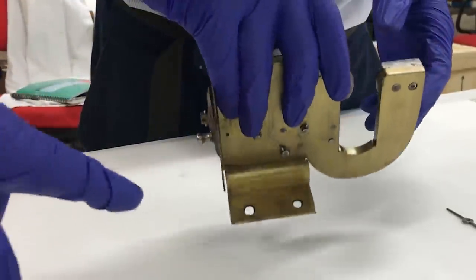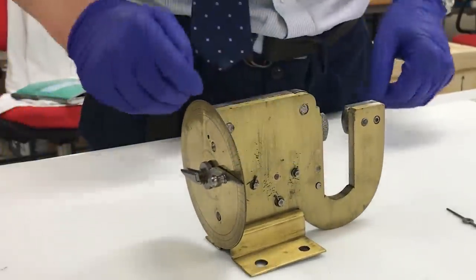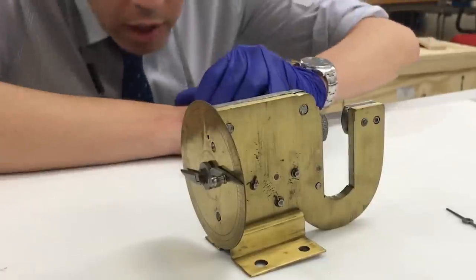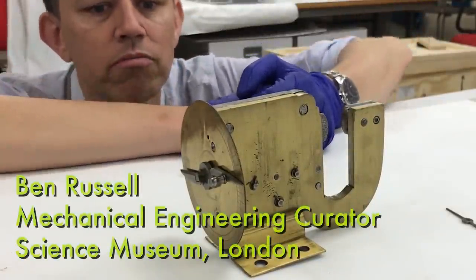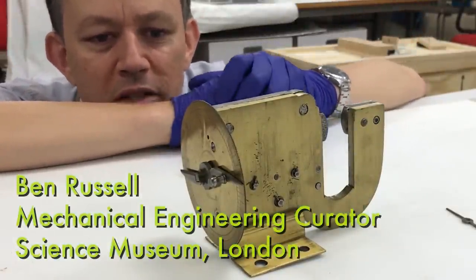I'm in the basement of the London Science Museum with Ben Russell, mechanical engineering curator, and we're about to take apart what could be the world's oldest micrometer and look at things very few people have ever seen.